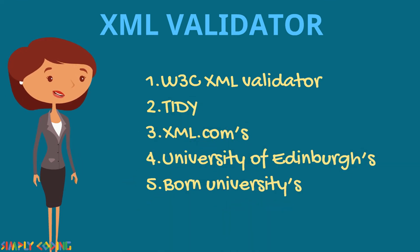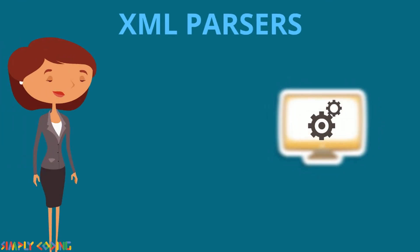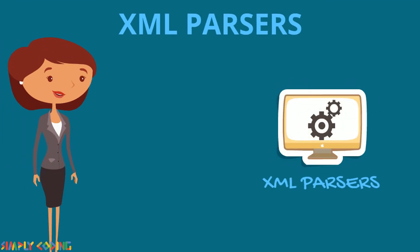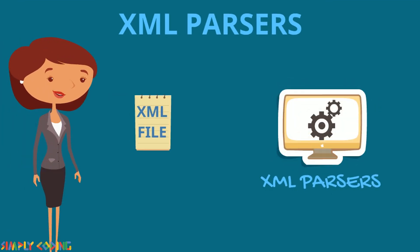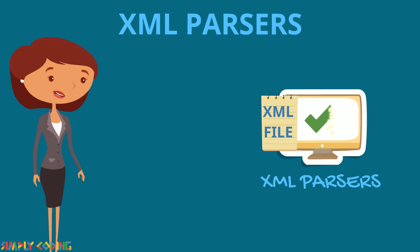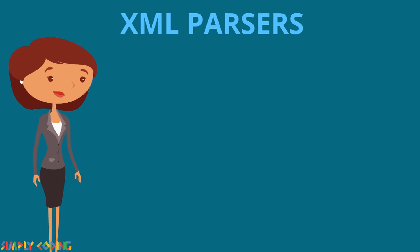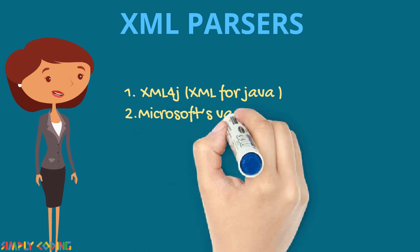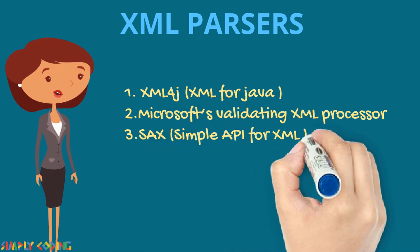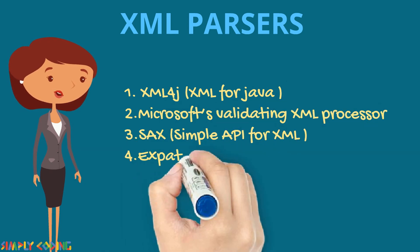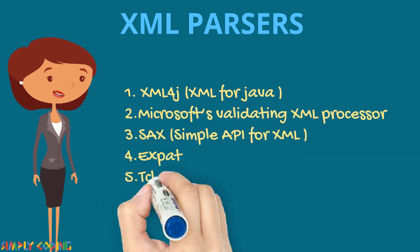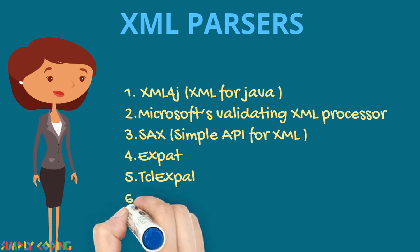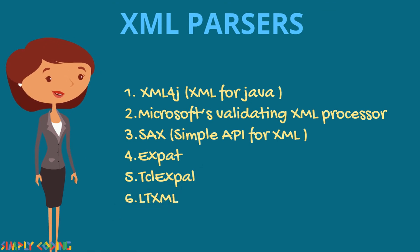XML parsers are software packages that check the syntax and structure used in an XML file. Here are some examples of XML parsers: XML4J, which is XML for Java; Microsoft's validating XML processor; and SAX, or Simple API for XML.